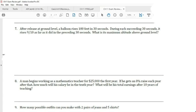After release at ground level, a balloon rises 100 feet every 30 seconds. During each succeeding 30 seconds, it rises 9 over 10 as far as it did before.